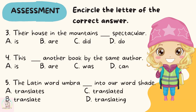Number three: their house is in the mountains, blank spectacular. A) is, B) are, C) did, D) do. Number four: this blank another book by the same author. A) is, B) are, C) was, D) can. Number five: the Latin word 'Umbra' blank into our word 'shade.' A) translates, B) translate, C) translated, D) translating.